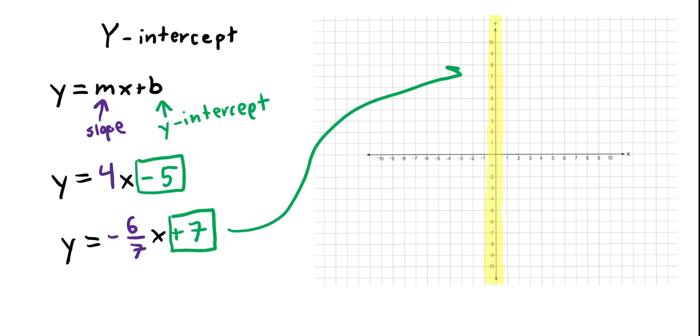So you know exactly where you would plot that y-intercept on the line. So for the last example, the y-intercept would be right there. And for the first example, your y-intercept would be at negative 5, right there. That's pretty much it.